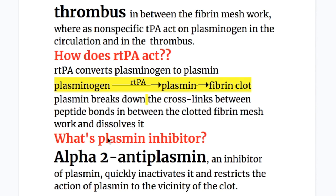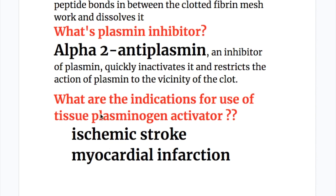How does rTPA act? rTPA converts plasminogen into plasmin. Plasmin then breaks down the cross-links between the peptide bonds in the clotted fibrin meshwork and dissolves it. Alpha-2 anti-plasmin is an inhibitor of plasmin that quickly inactivates it and restricts the action of plasmin to the vicinity of the clot.